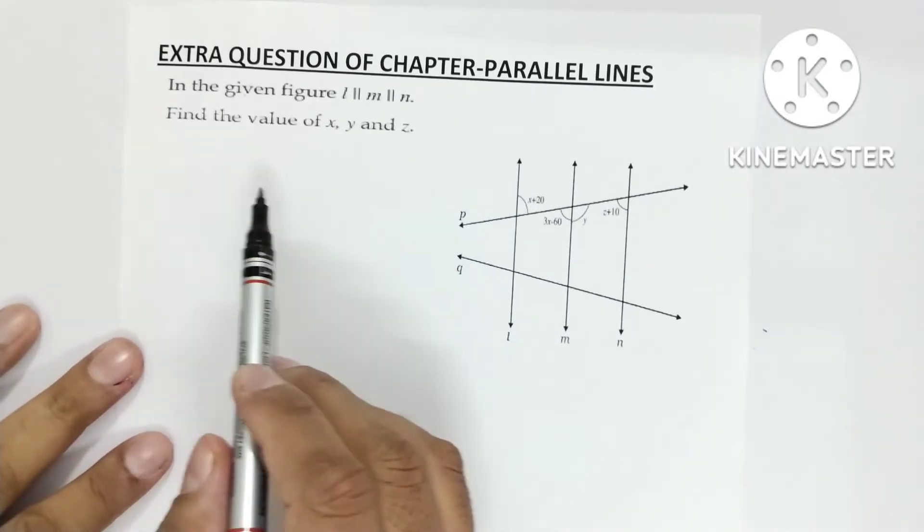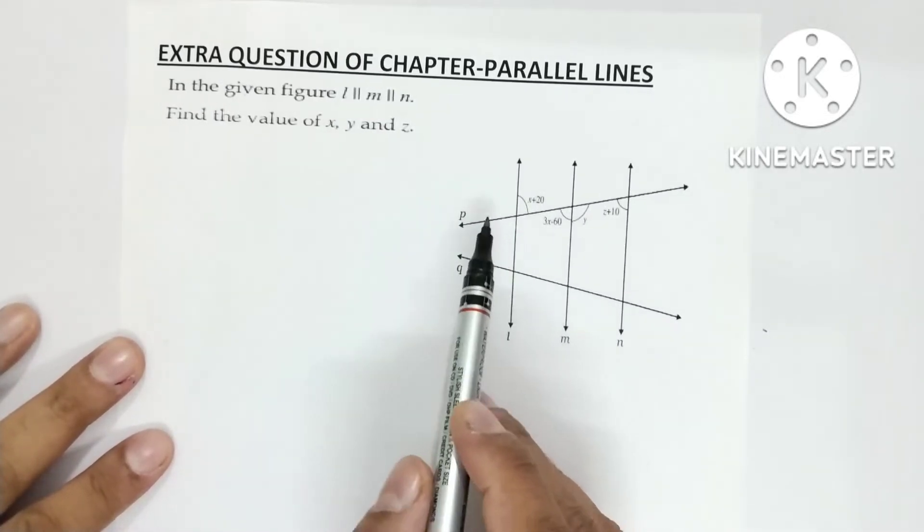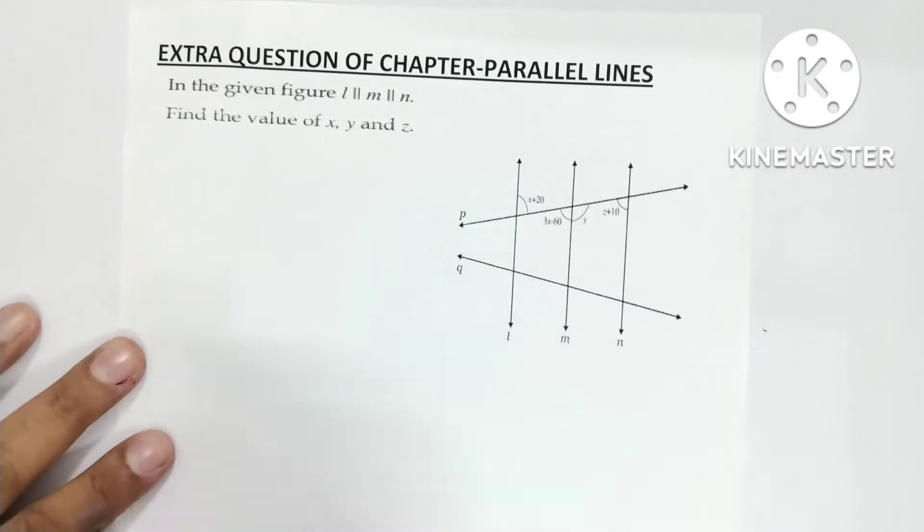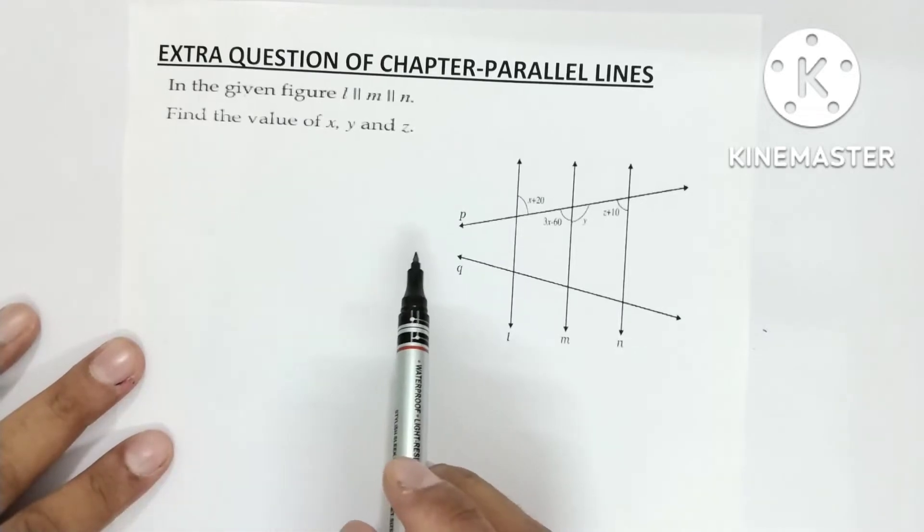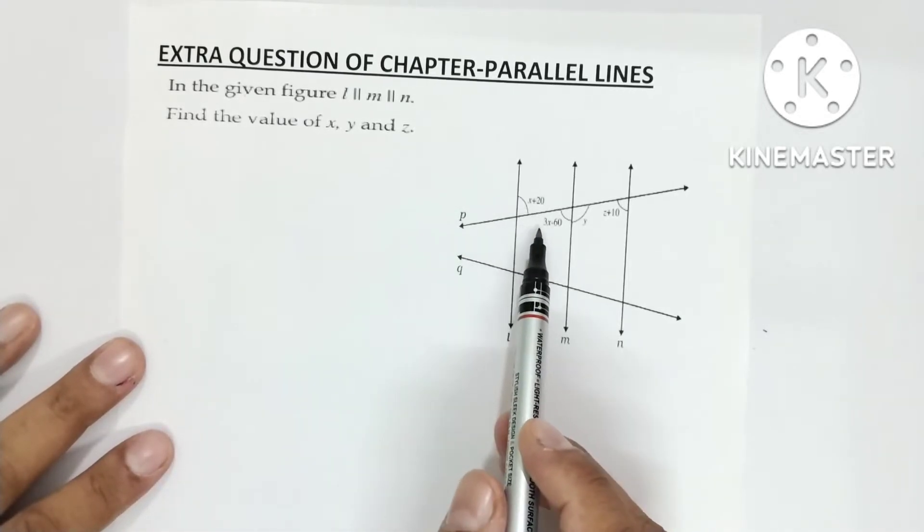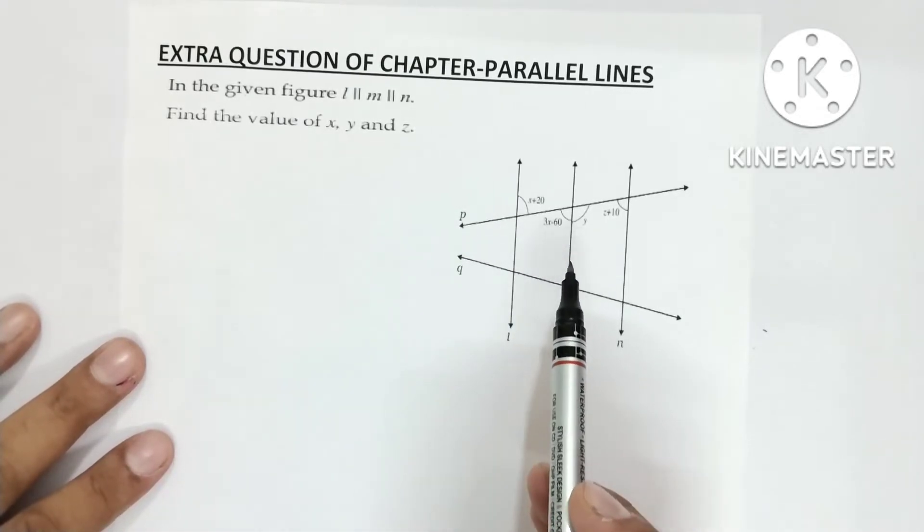So question is, in the given figure, this L is parallel to M and M is parallel to N. Means all the three lines are parallel. We need to find the values of X, Y and Z.